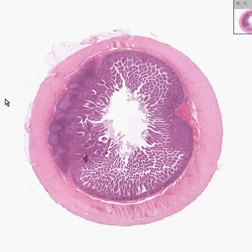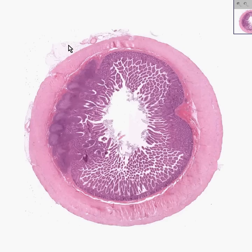The small intestine is another classic example of the overall organization of the four layers of the gastrointestinal system. Like most other gastrointestinal organs that have a lumen, we have a mucosa, a submucosa, a muscularis, and a serosa. Virtually the entire small intestine — jejunum or ileum — is covered by peritoneum and is intraperitoneal. So if you look closely, you may see some mesothelial cell linings on the surface.